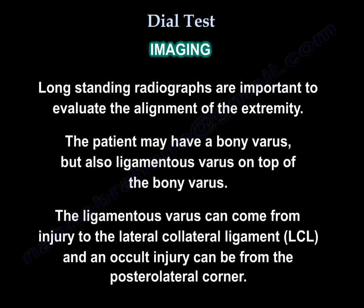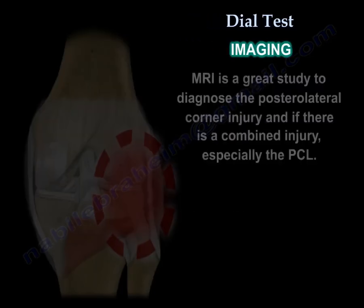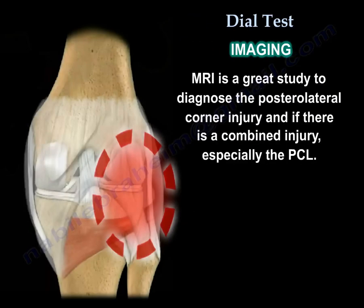Long-standing radiographs are important to evaluate the alignment of the extremity. The patient may have a bony varus, but also ligamentous varus on top of the bony varus — the ligamentous varus can come from injury to the lateral collateral ligament, and the occult component can be from the posterolateral corner. MRI is a great study to diagnose the posterolateral corner injury and any combined injury, especially with the PCL.